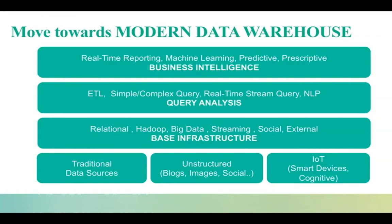This slide provides one view of a modern data warehouse. At the bottom layer you have the data sources, comprising traditional sources like relational databases and CRM, unstructured sources like blogs, Twitter, financial reports, and PDF documents, and data from devices and cognitive apps. The base layer provides infrastructure capabilities supporting relational databases, columnar databases, non-relational databases like Hadoop, and real-time streaming infrastructure for dealing with in-flight data from IoT devices.